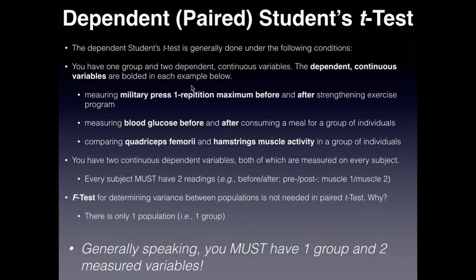In technical terms, you're going to have one group — think of it as one subject — and you're going to have two dependent continuous variables. Those dependent continuous variables are what you're measuring on one subject.